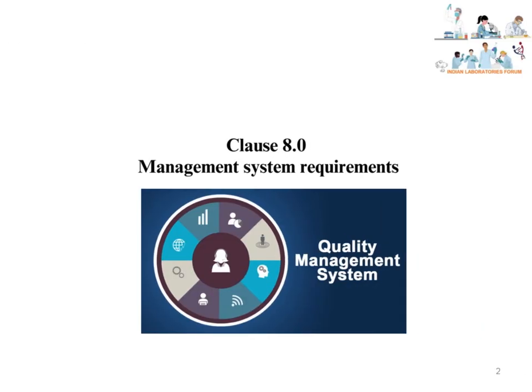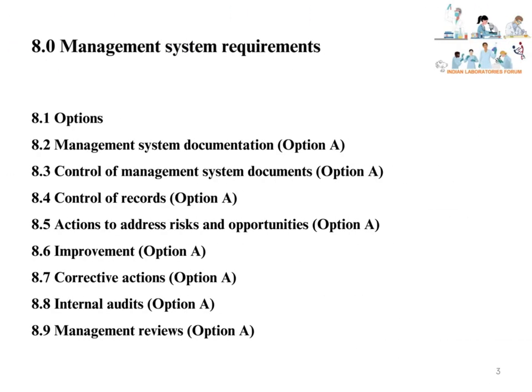Clause 8.0 Management System Requirements has a total of nine sub-clauses: Clause 8.1 Options, Clause 8.2 Management System Documentation, Clause 8.3 Control of Management System Documents, Clause 8.4 Control of Records, Clause 8.5 Actions to Address Risks and Opportunities, Clause 8.6 Improvement, Clause 8.7 Corrective Actions, Clause 8.8 Internal Audits, and Clause 8.9 Management Reviews.